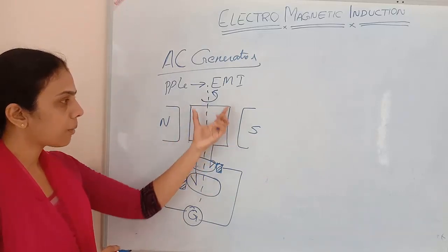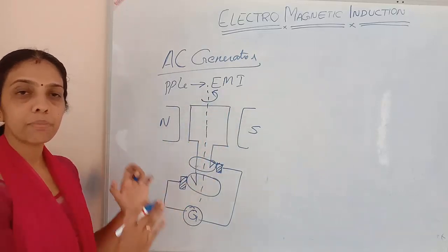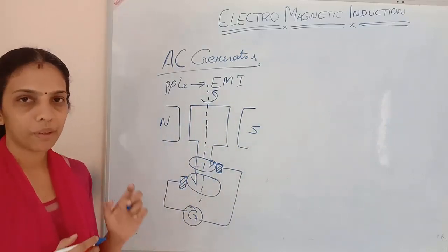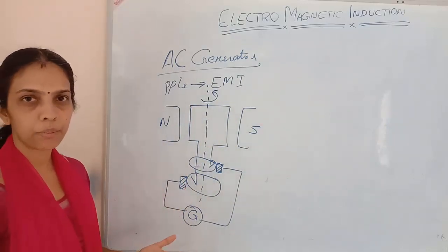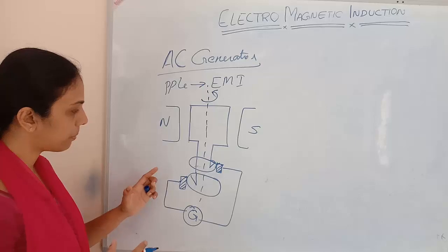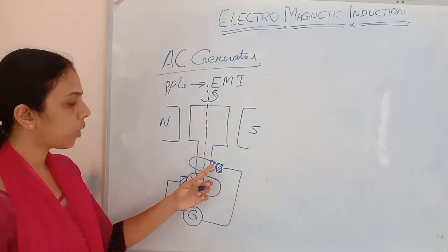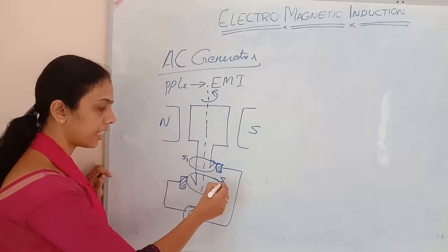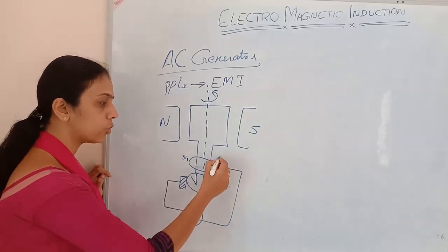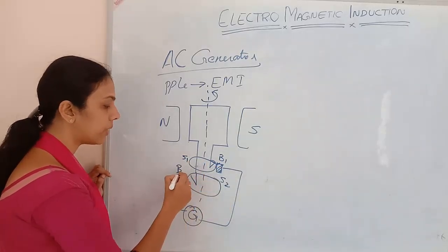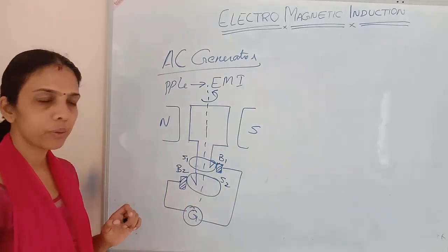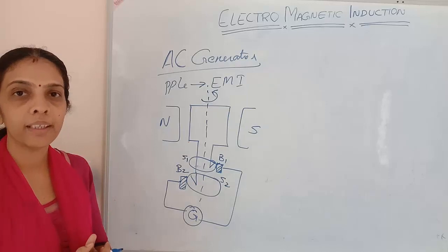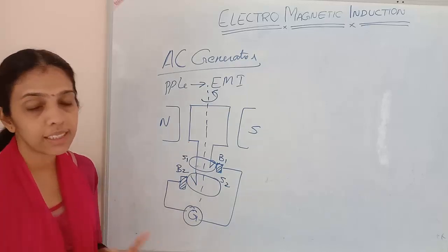The armature coil is kept between the pole pieces of an electromagnet or a permanent magnet. A heavy magnet is used, and the ends of the coil are connected to two slip rings S1 and S2, which are in contact with two brushes B1 and B2. When we rotate this coil, electricity will be generated.